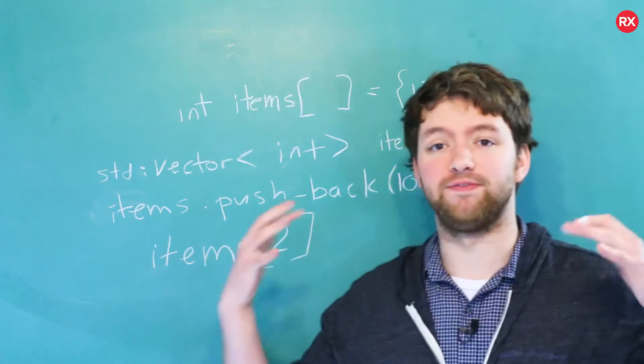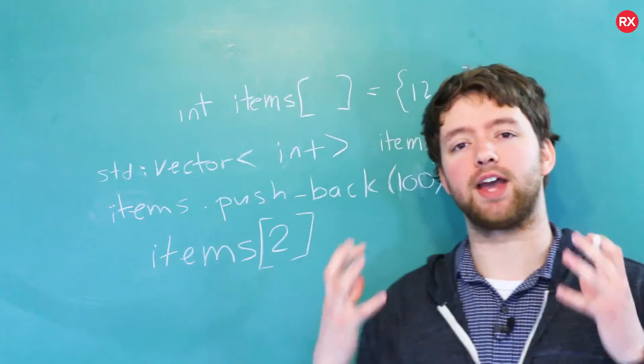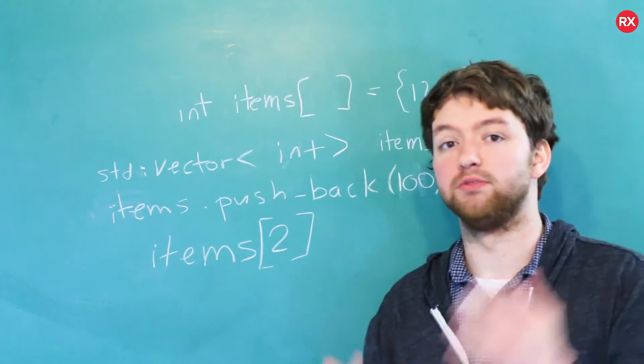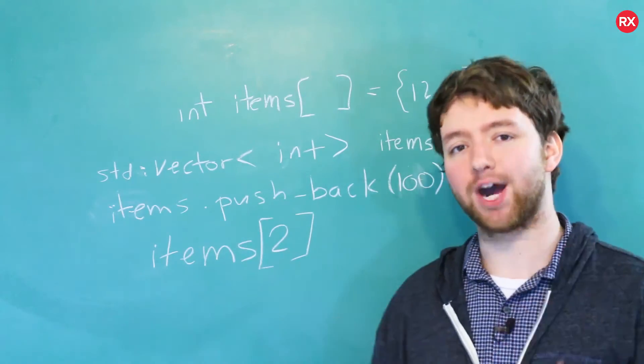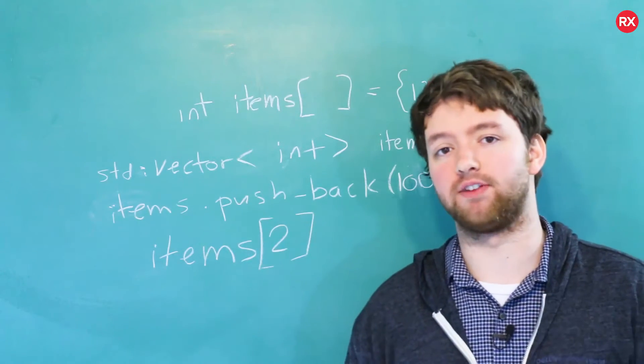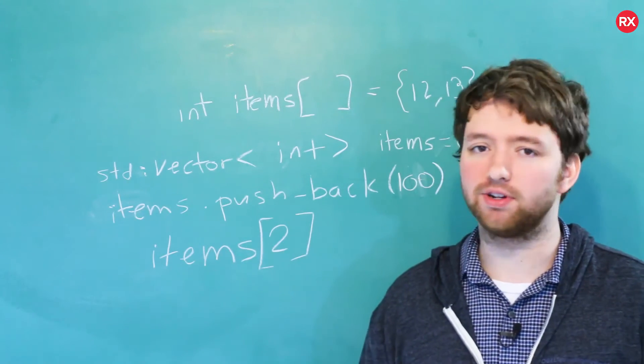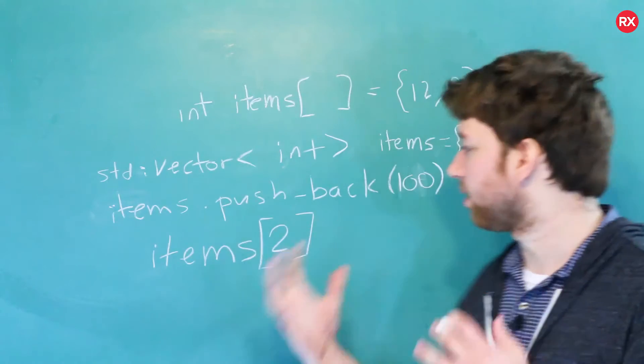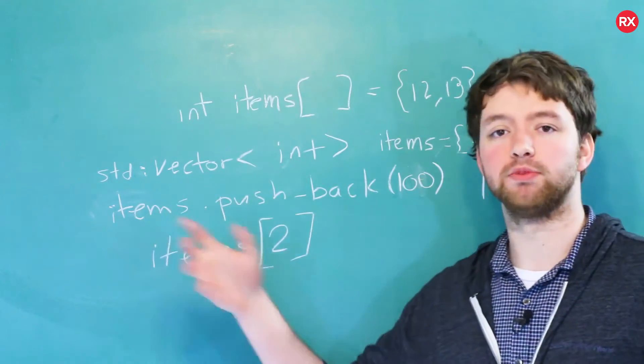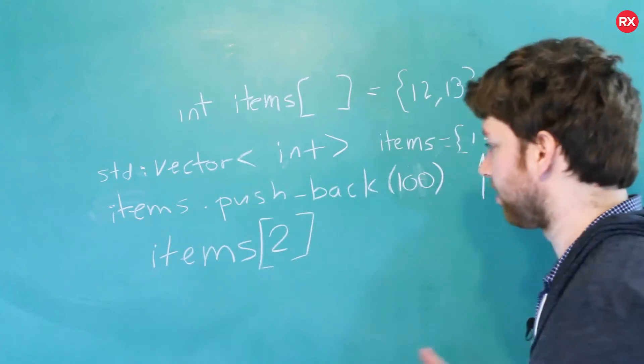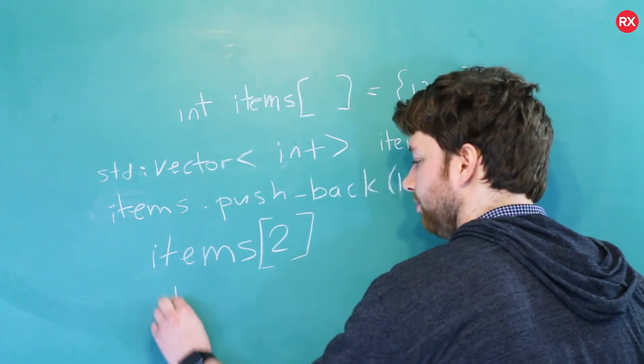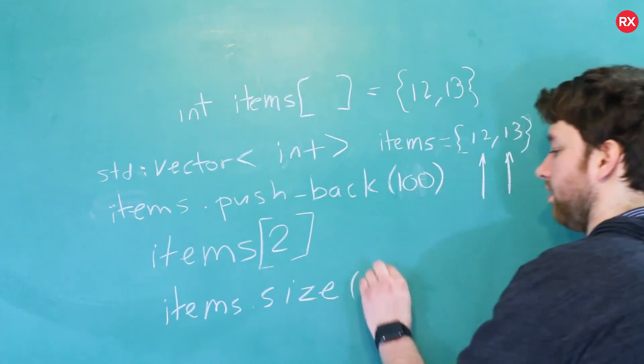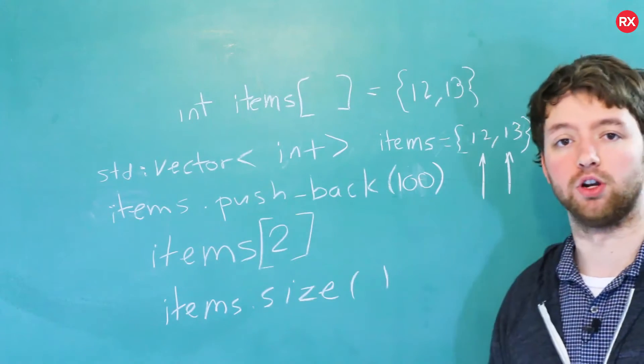But you know what else is very awesome when it comes to vectors is they actually know their size. So if you remember when we were working with arrays, we had to calculate their size using the size of operator. Well, we don't do none of that junk anymore. There is a special method attached to items that will give us the size. So that will look like this. You just say items dot size. So in this case, it's going to return 3.